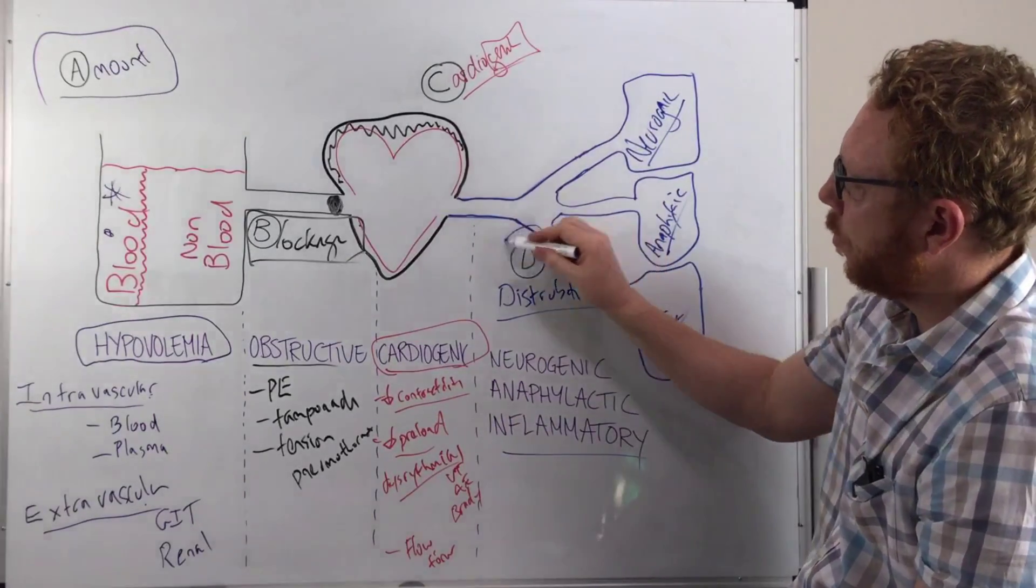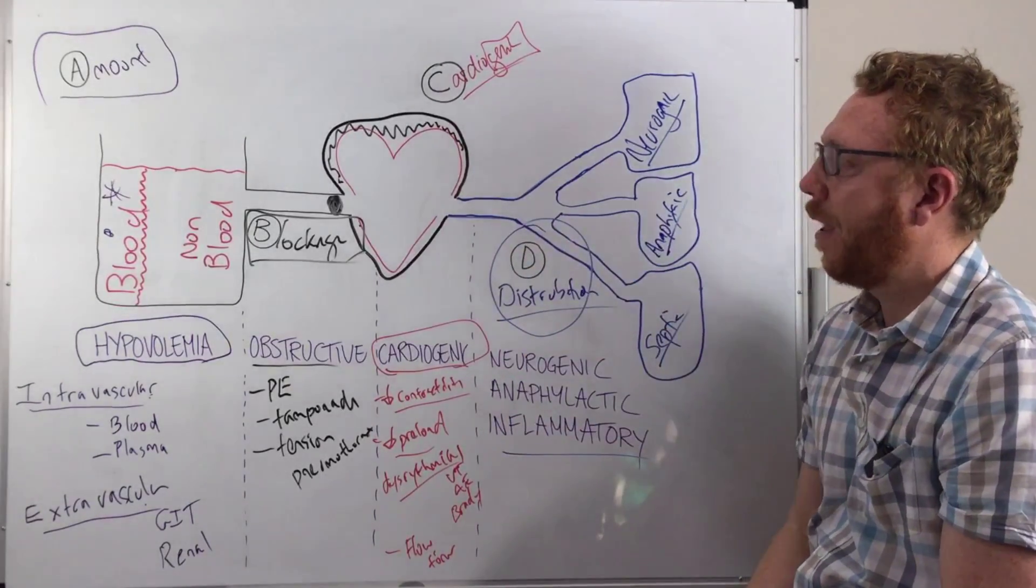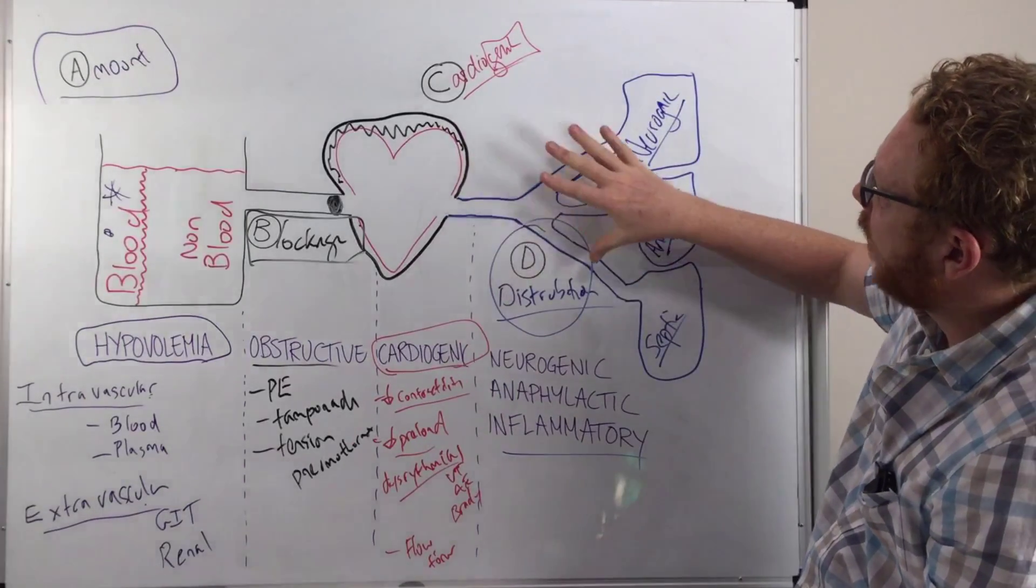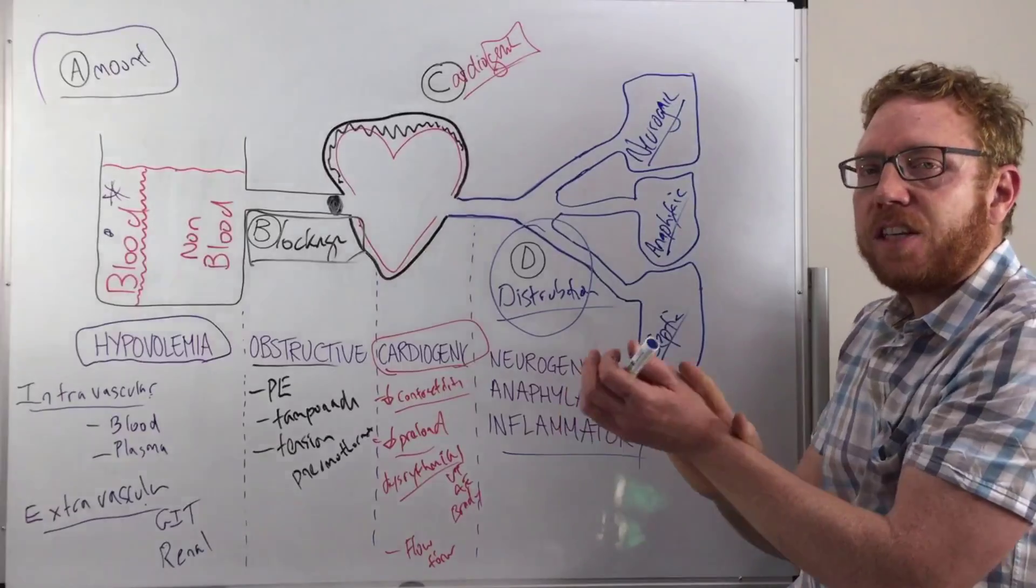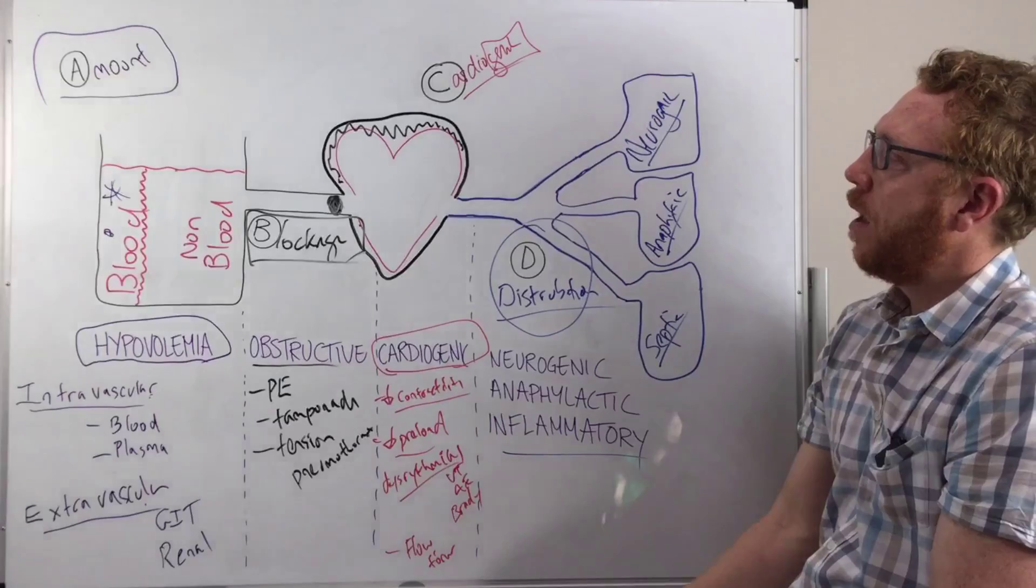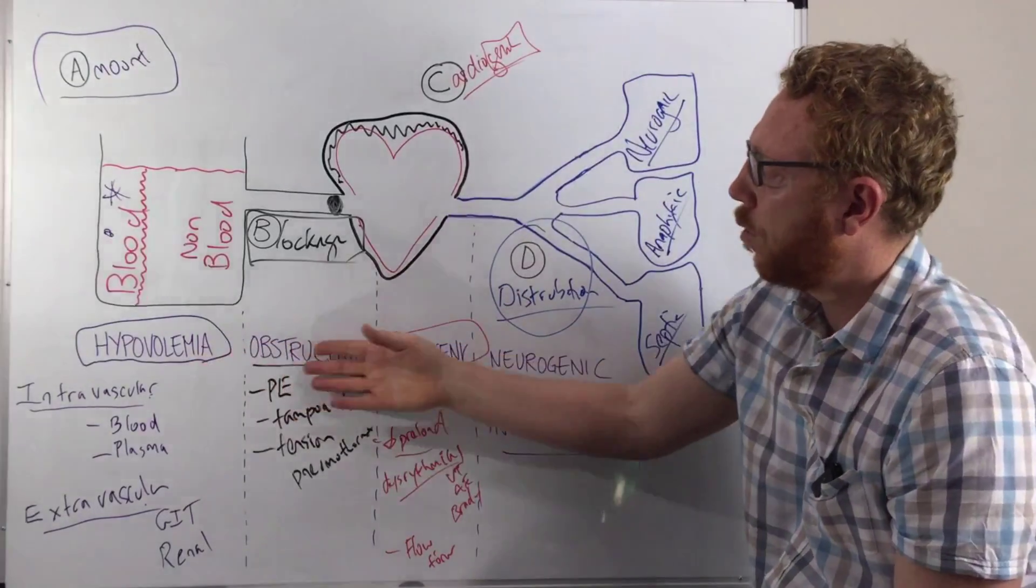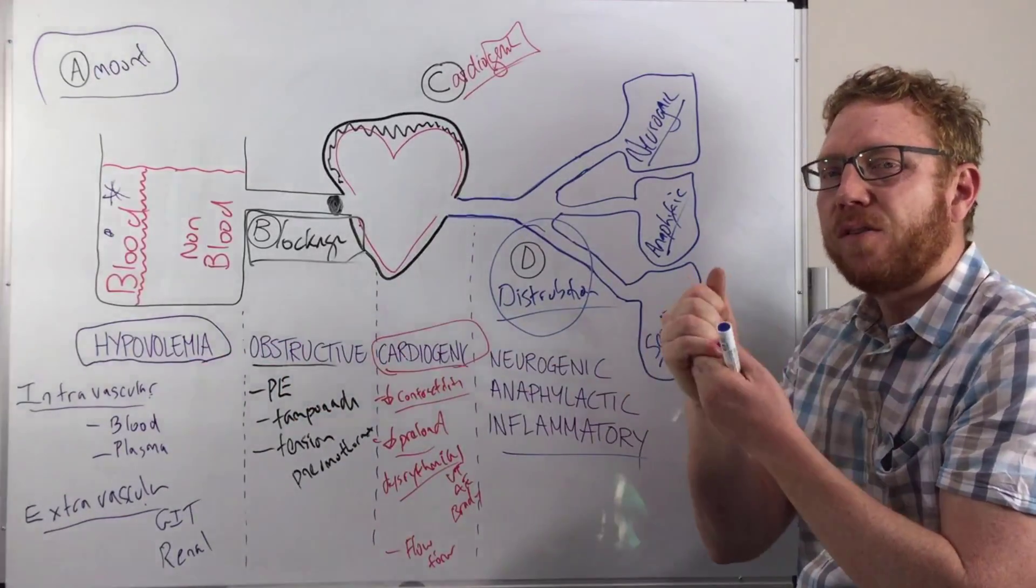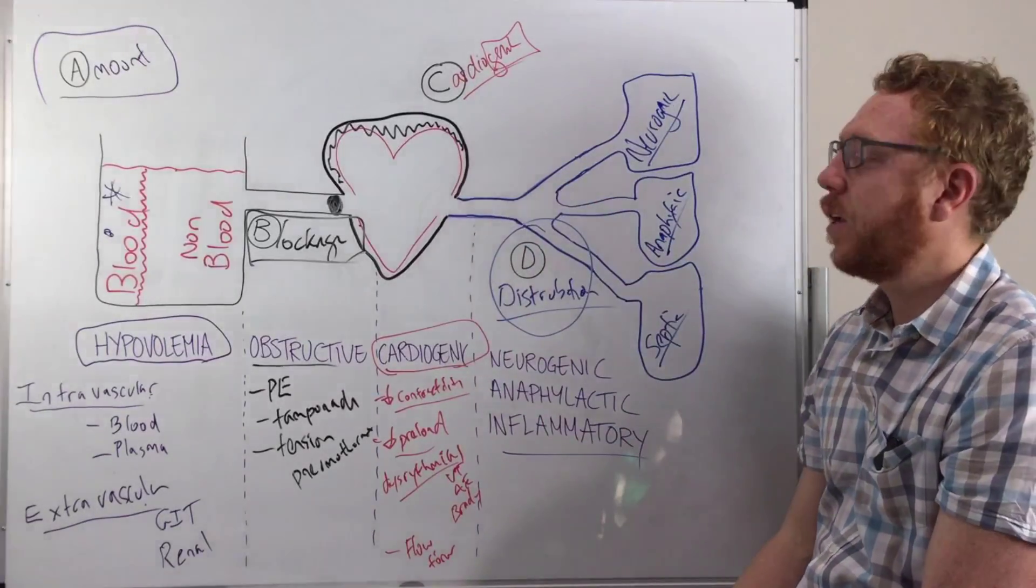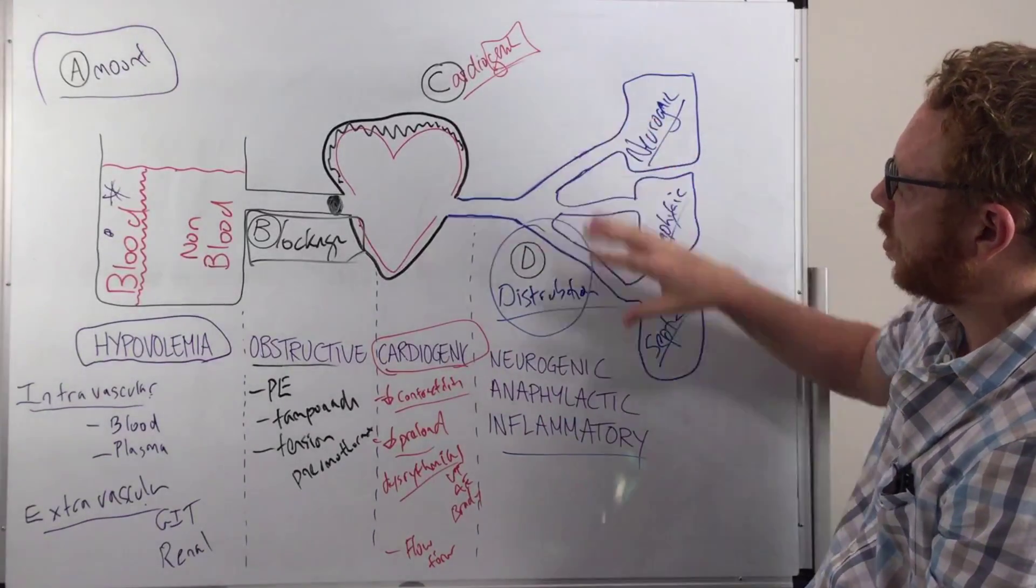The only difference is with the distribution shock, which is important to remember, at least in the early phase of shock, because we've got so much vasodilation, the tissue may actually feel warm. Whereas in these forms, because we're getting such poor output, these patients in these forms of shock would actually probably feel cold and clammy. Whereas these guys in the early stage might actually be quite warm because you've got so much dilation.